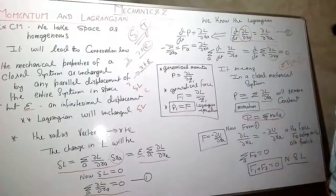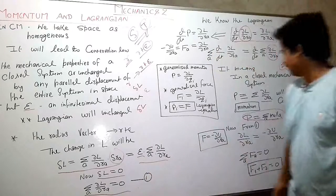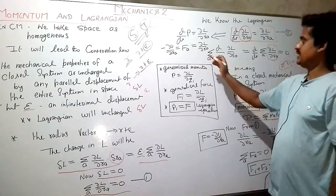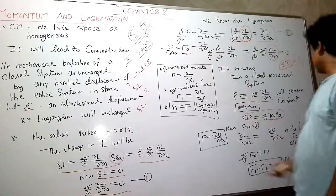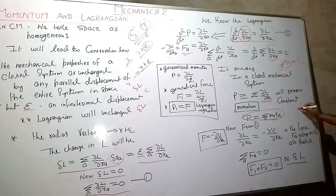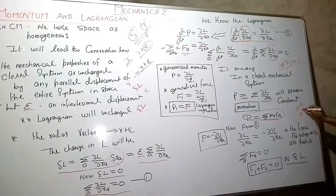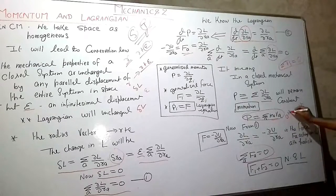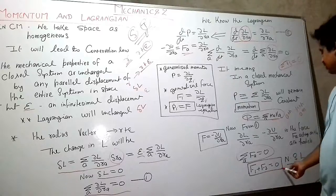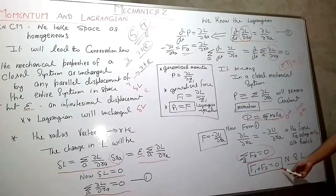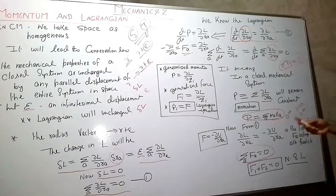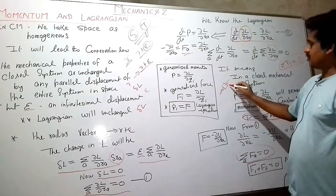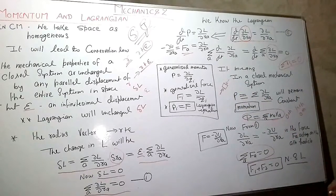From equation one, ∂L/∂r_a equals minus ∂U/∂r_a, which is the force acting on the a-th particle. This means the total force acting on the a-th particle in the closed system is zero: F1 plus F2 equals zero. This is the standard Newtonian second law — every force acting on an object is repelled by the same amount of force.